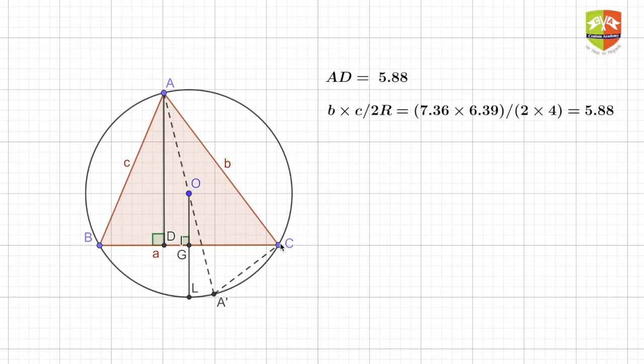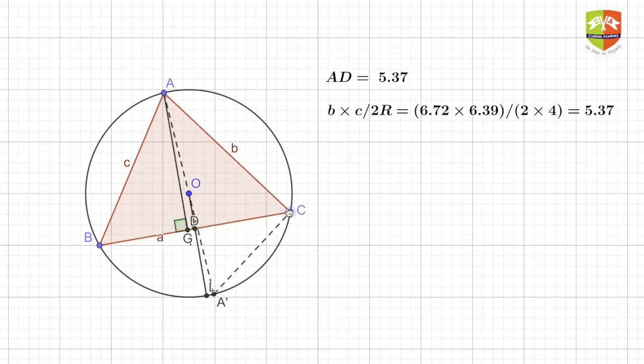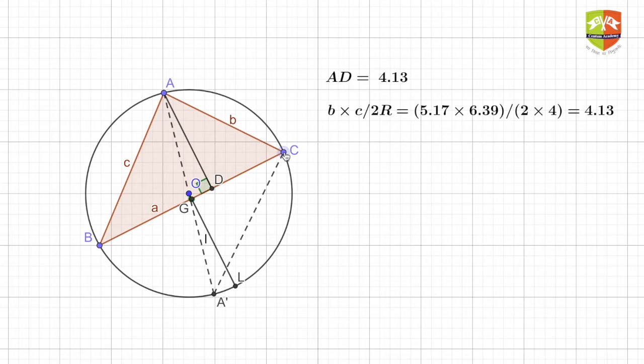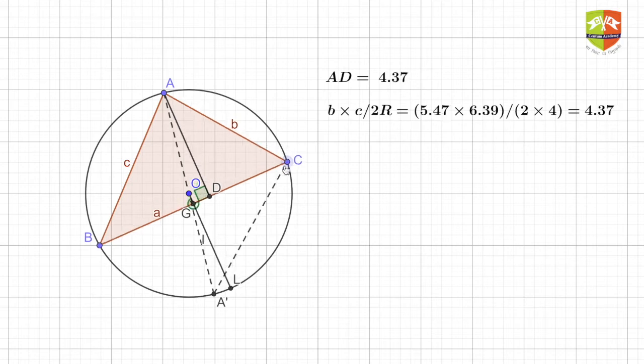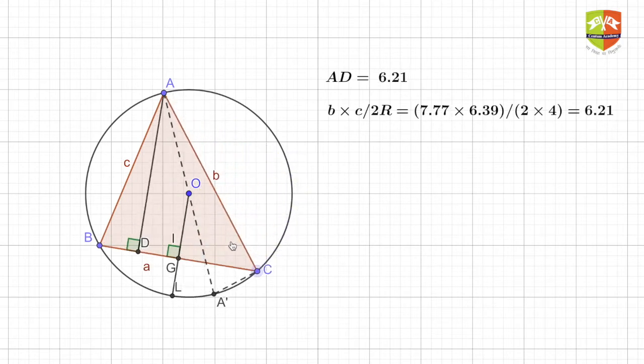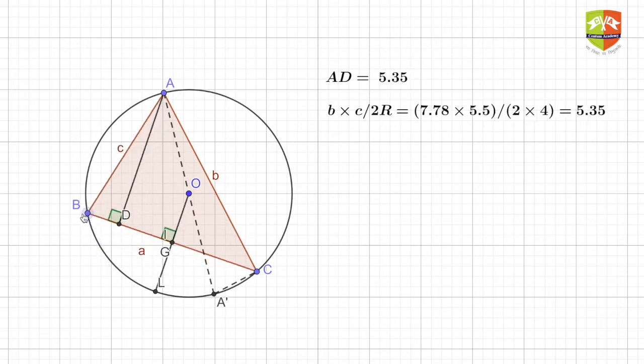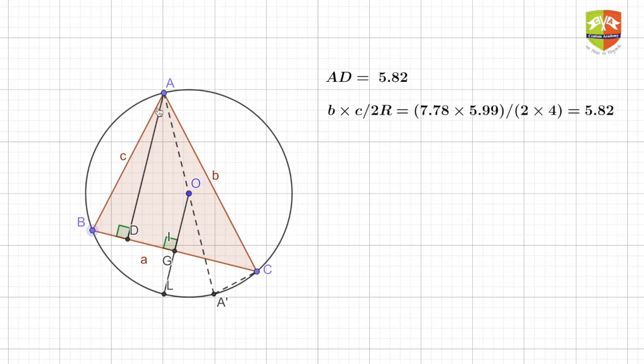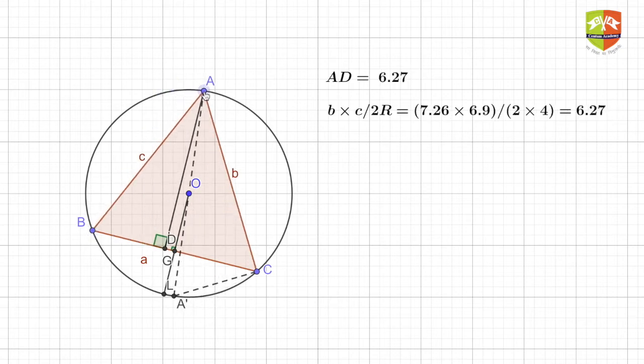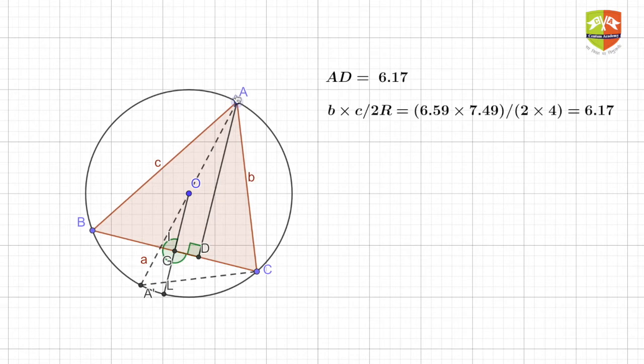So what we'll do is we'll just change the position of C, and you can now see that whatever is the position of C, we can calculate the value of AB. It's very much possible. You can see even if I change the position of B it remains the same, correct. It hardly matters, right? Hence you'll get the same value.